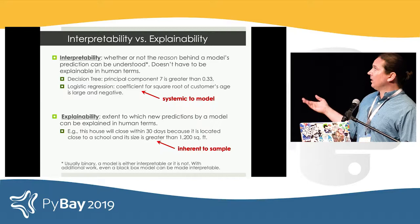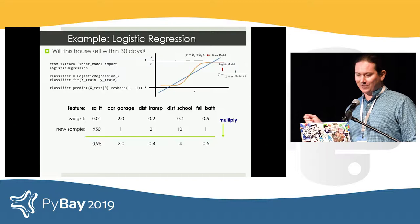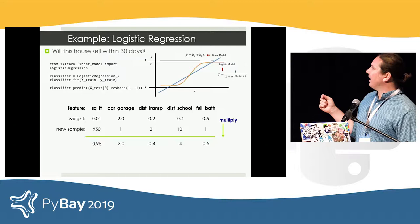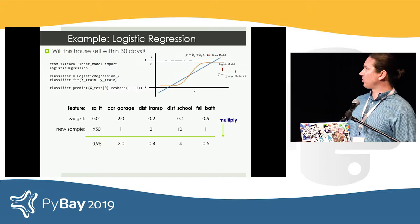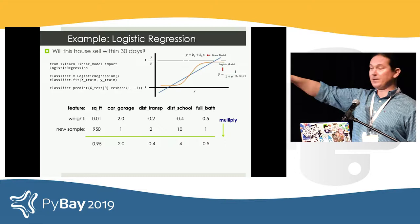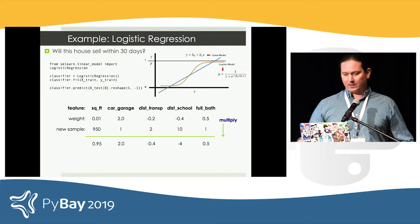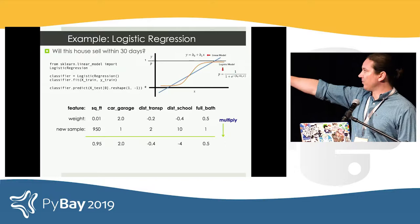So logistic regression — this is the example. This is great in Python because you can write a logistic regression model in three lines of code. In this case, we have some features — it's just a bunch of feature weights: 0.01 for the square footage, 2.0 for how many cars in the garage, etc. So now we have a new sample: this house is 950 square feet, one-car garage, etc. Will it close in 30 days or not?